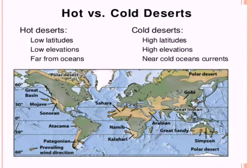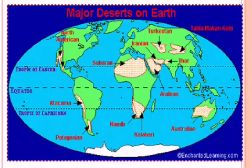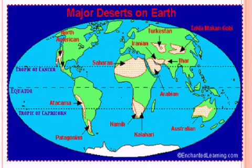Hot deserts are at lower elevations, far from seas, in interior locations. Cold deserts are near cold ocean currents, at higher elevations and higher latitudes. The major deserts of the world chart reinforces this. When you see pictures in the ecology portion — or any history or art and culture portion — the rich visuals give you a realization effect that helps you understand and remember conditions better.